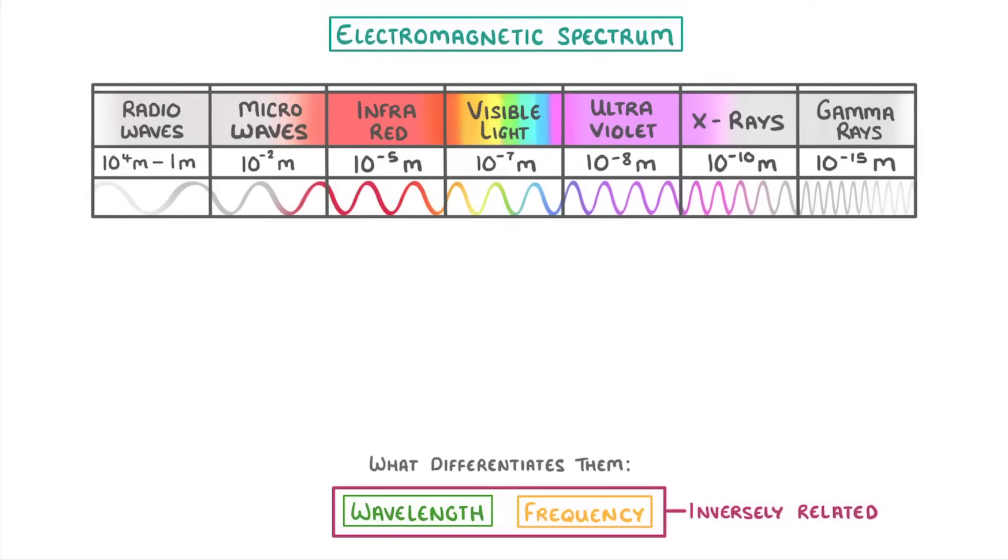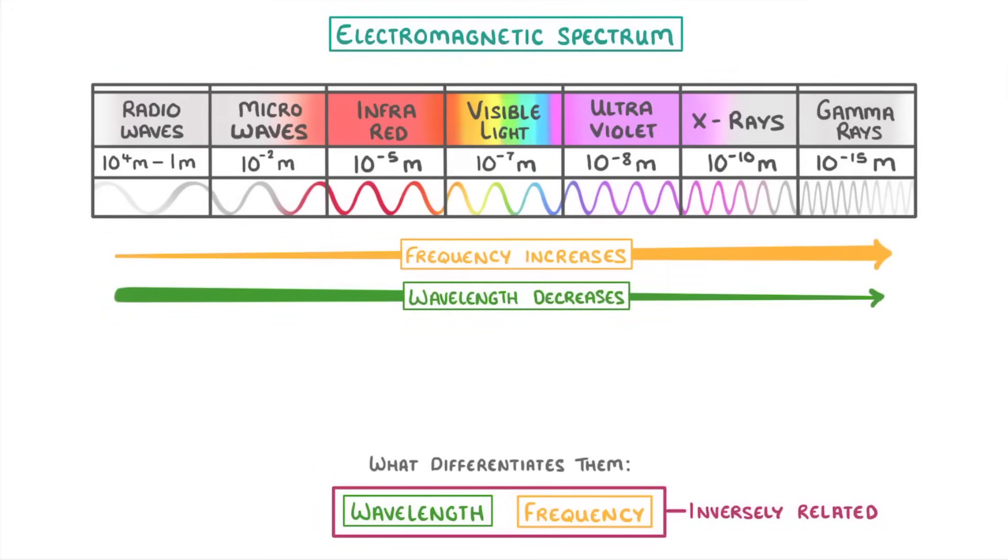If you read the table from left to right, the frequency increases while the wavelength decreases. So radio waves have the biggest wavelength but the smallest frequency, and gamma rays have the smallest wavelength but the biggest frequency. To give you a rough idea of the wavelengths, they vary from multiple kilometers for radio waves to less than a thousandth of a nanometer for gamma rays.